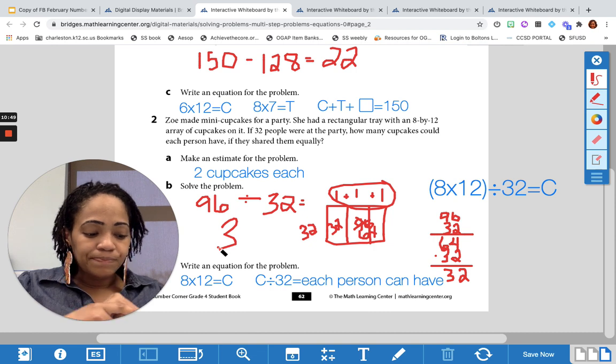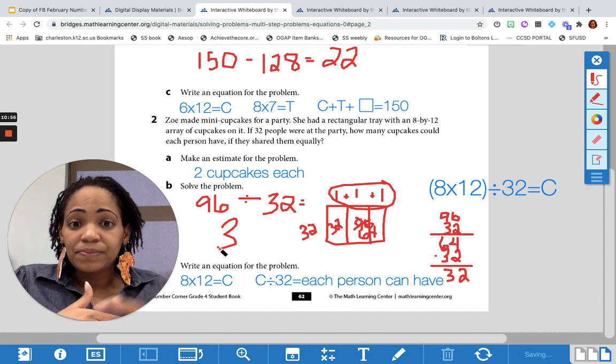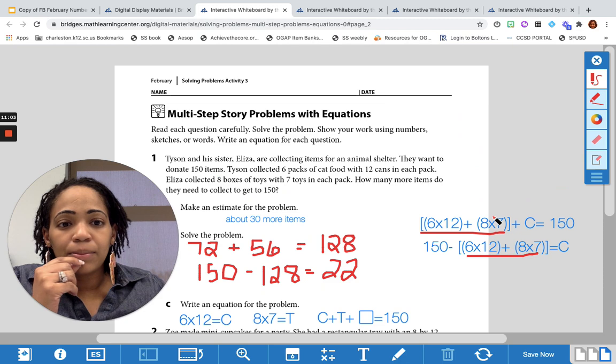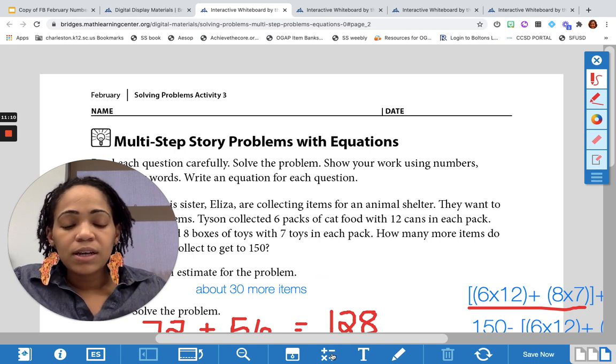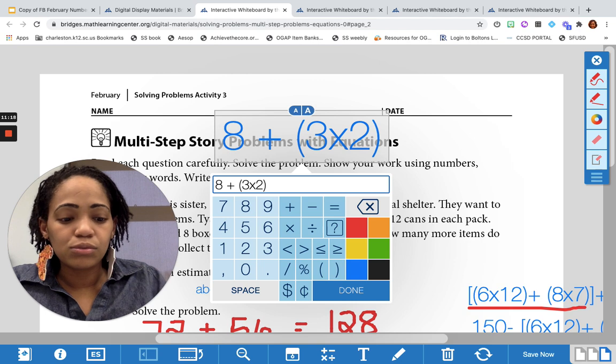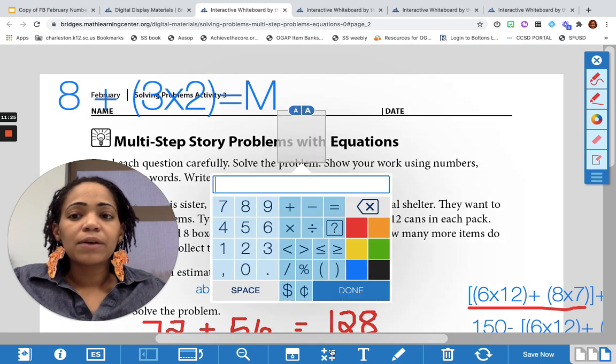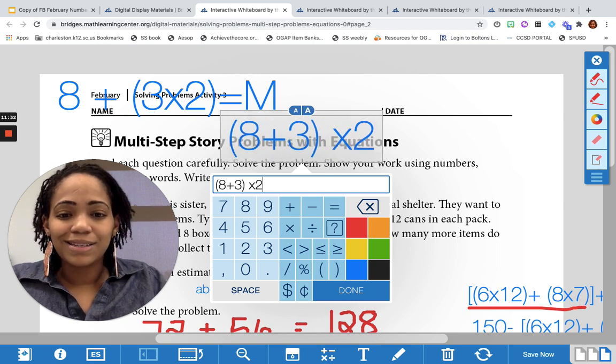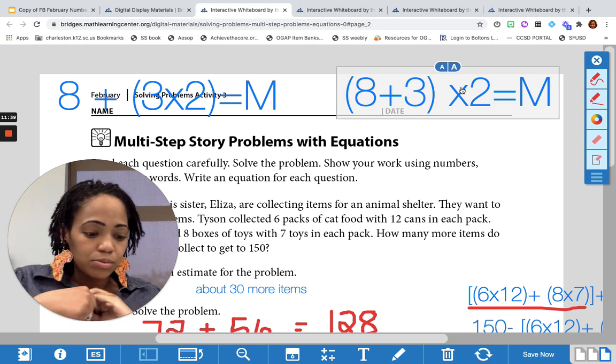One other question before we move on. This whole time when we've been talking about solving problems, our focus has been on equations to match a story problem, and then the fact that when you see parentheses, you do that first. So I am going to write a problem for you. I'll just write it up here, and I want you to solve for it, and we're going to talk about the difference. So I have 8, and I'm going to do plus 3 times 2, equals M. I want you to solve that really quickly, and then I want you to solve this one: 8 plus 3 times 2 equals M. Take a moment and solve it. If you need to pause this video, please do so.